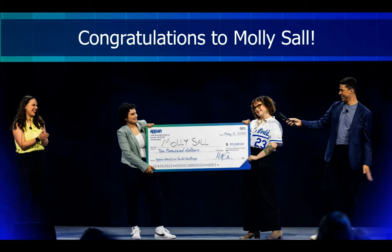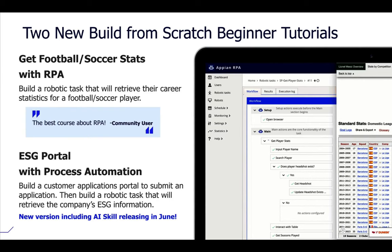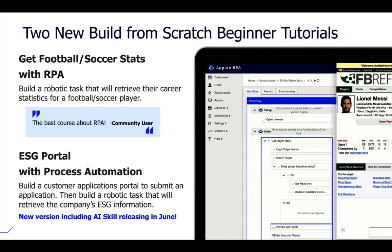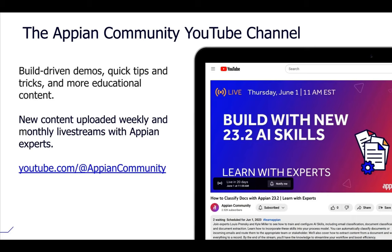The Live Build Challenge recording is available on the Community YouTube channel, and you can download use case requirements from community.appian.com/challenges to test your Appian skills. We have two new build-from-scratch beginner tutorials: get football stats with RPA, and an ESG portal with process automation — with a new version including AI Skill coming in June. We also have two new courses on AI Skill: Introduction to AI Skill, and Automate Your Business Tasks with AI Skills. On June 1st, I'll be joined by Lewis Prensky, Senior Product Manager, and Kyle Miller, Product Evangelist, for a live stream showcasing AI Skill Designer. Subscribe to the Appian Community YouTube channel so you never miss an upload or live stream.